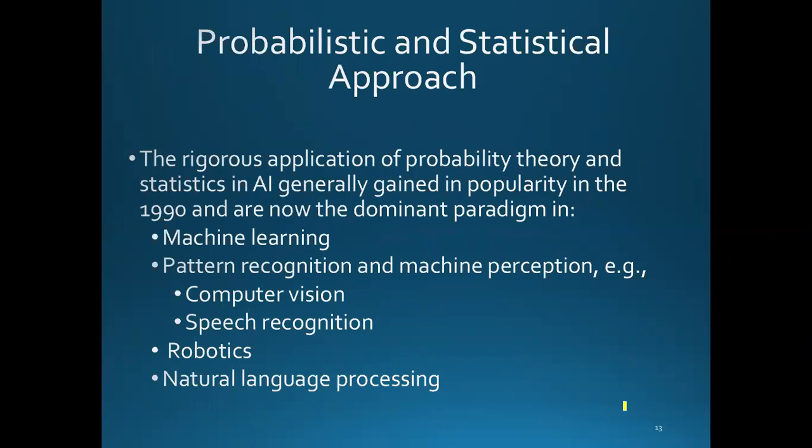Another type of artificial intelligence system involves probabilistic methods — AI solves probability and statistical problems. Rigorous applications of probability theory and statistics in AI gained popularity in the 1990s and are now dominant. For example, machine learning works on the basis of probability and statistical approaches. Pattern recognition and machine perception — including computer vision, speech recognition, robotics, and natural language processing — work on the basis of these methods.